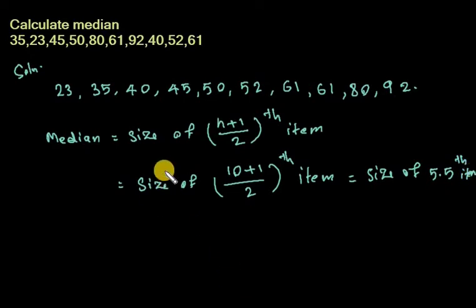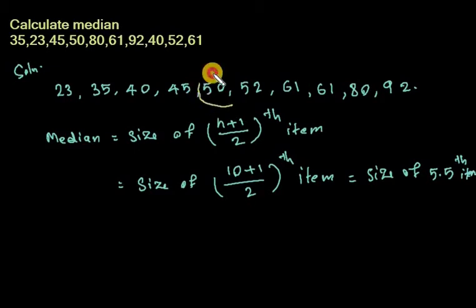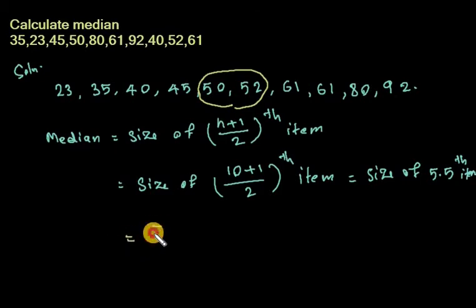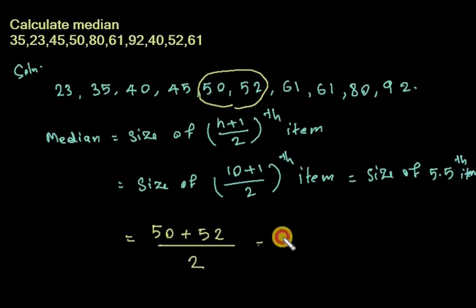Since the result is 5.5, we take the average of the 5th and 6th items. The 5th and 6th items are identified from the arranged series, and the median equals the average of those two values — that is, the sum of the 5th and 6th items divided by 2.